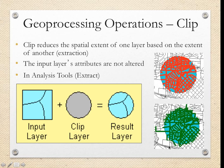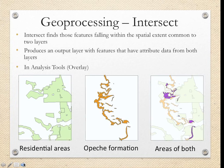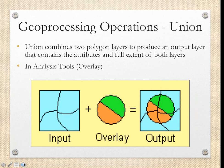The next tool is CLIP. The CLIP tool will reduce the extent of one layer based on the extent of another layer. For example, if you had a streets layer covering all of Los Angeles and another layer that's just an outline of downtown Los Angeles, and you wanted to display only streets within downtown, you could use the CLIP tool to create a new feature class of just downtown LA streets. The input layer would be streets and the clip layer would be the outline of downtown — and the streets layer's attributes are not actually altered.